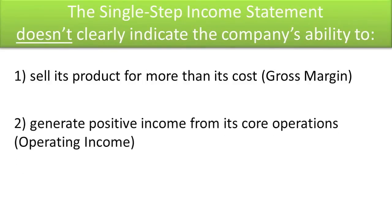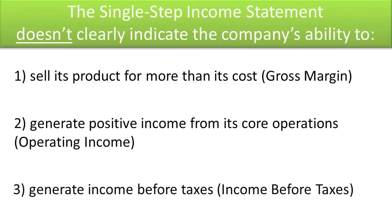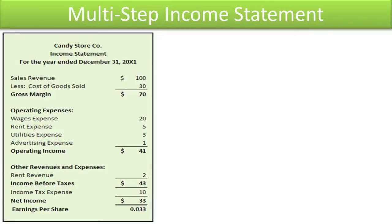Other key metrics include the ability to generate positive income from core operations (operating income), generate income before taxes (income before taxes). To resolve these deficiencies of the single-step income statement, company management often provides a multi-step income statement.